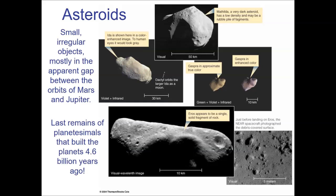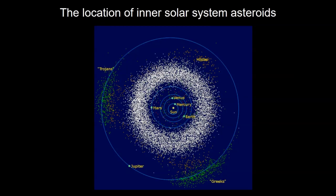Asteroids are sort of randomly all over the solar system, but there are places where they show up the most. This picture is actually a map that NASA generated — it's on a particular day where they keep track of all of the inner solar system bodies. The white portion you see here is what's known as the asteroid belt, a region that goes from about 2 to about 3.5 AU, where you find most of the asteroids in the inner solar system.